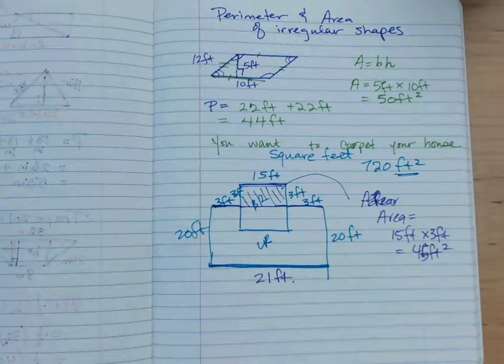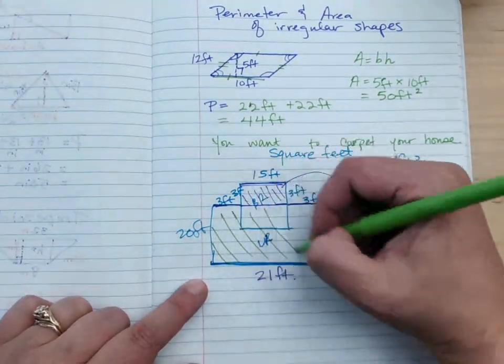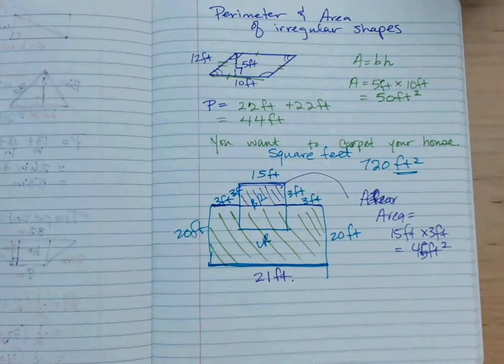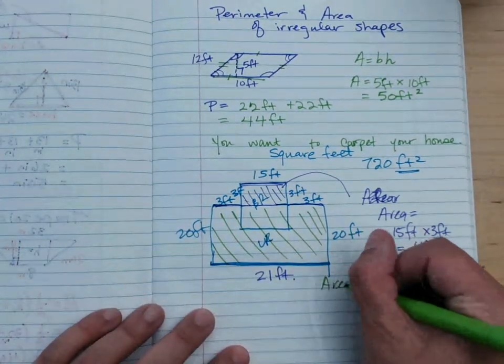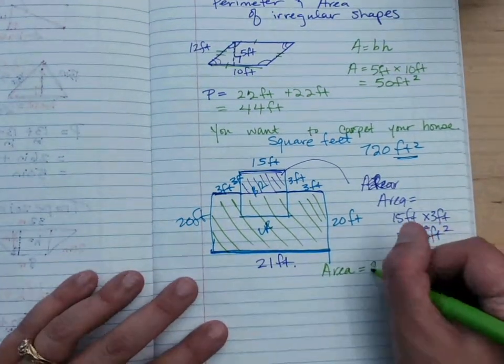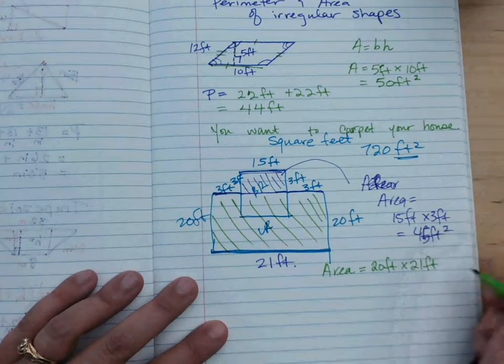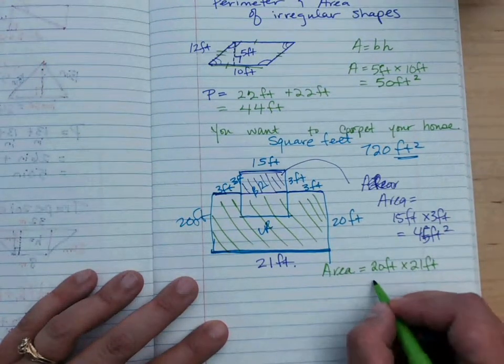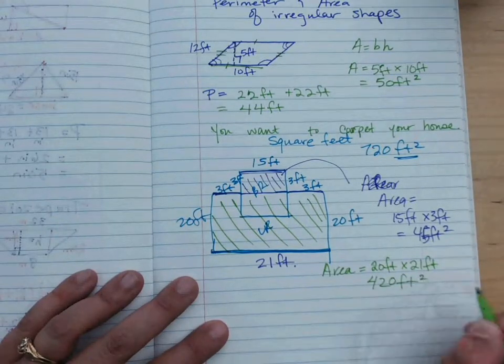Now, if I want to find the area of this whole, let's call this the living room and part of the bedroom. So how would I find the area of just that piece? What would it be? So it would be 20 feet times 21 feet, and 2 times 21 is 42, and then put a 0. Is that what you have? Feet squared.